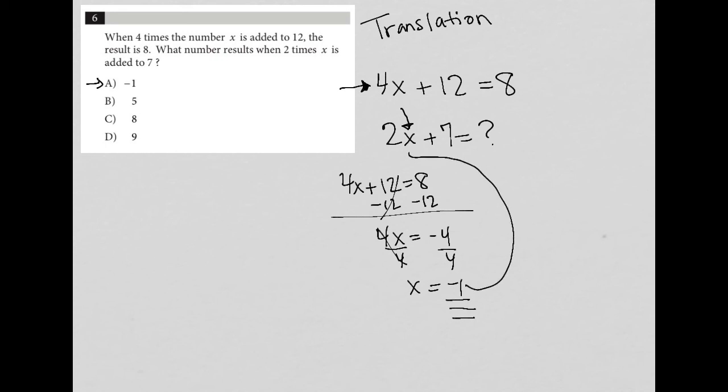It asks us what 2X plus 7 is equal to. So I'm going to plug that negative 1 in for X, which means that this 2 times X becomes negative 2, right? Because 2 times negative 1 is negative 2, and then plus 7.